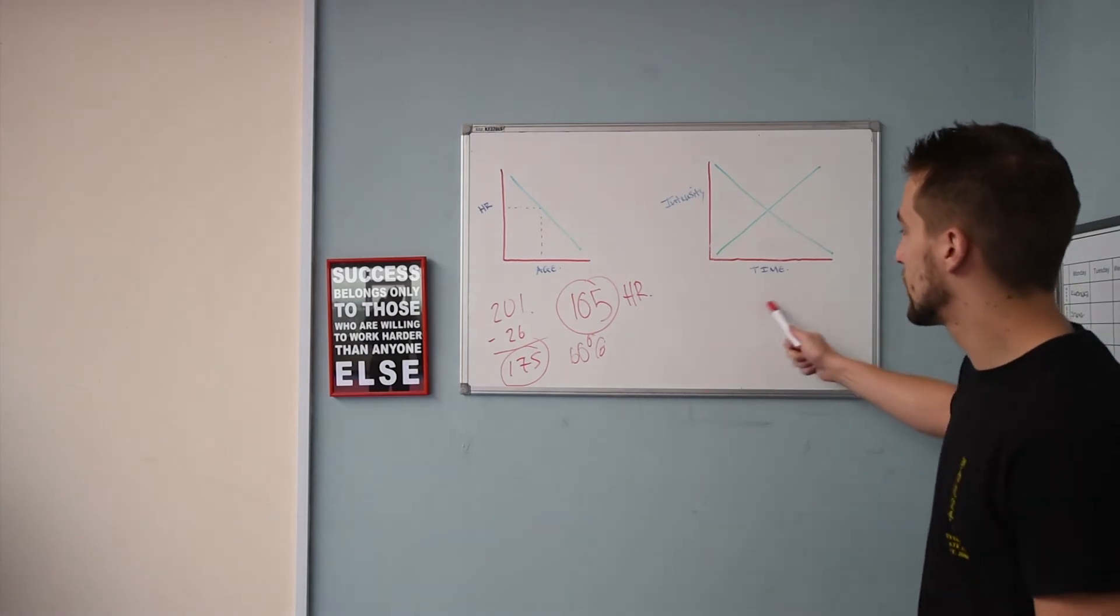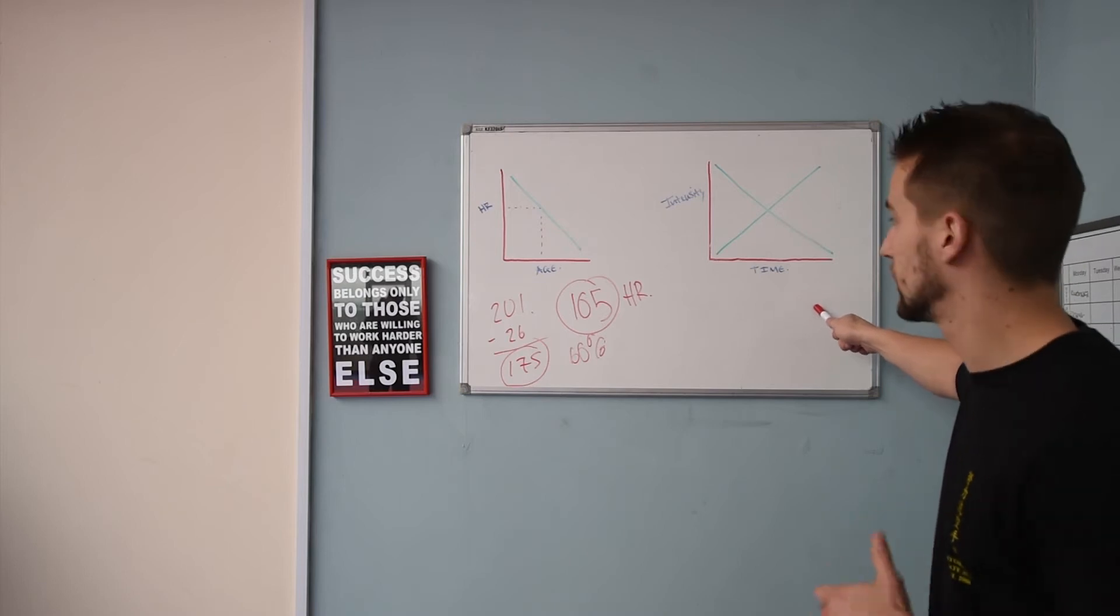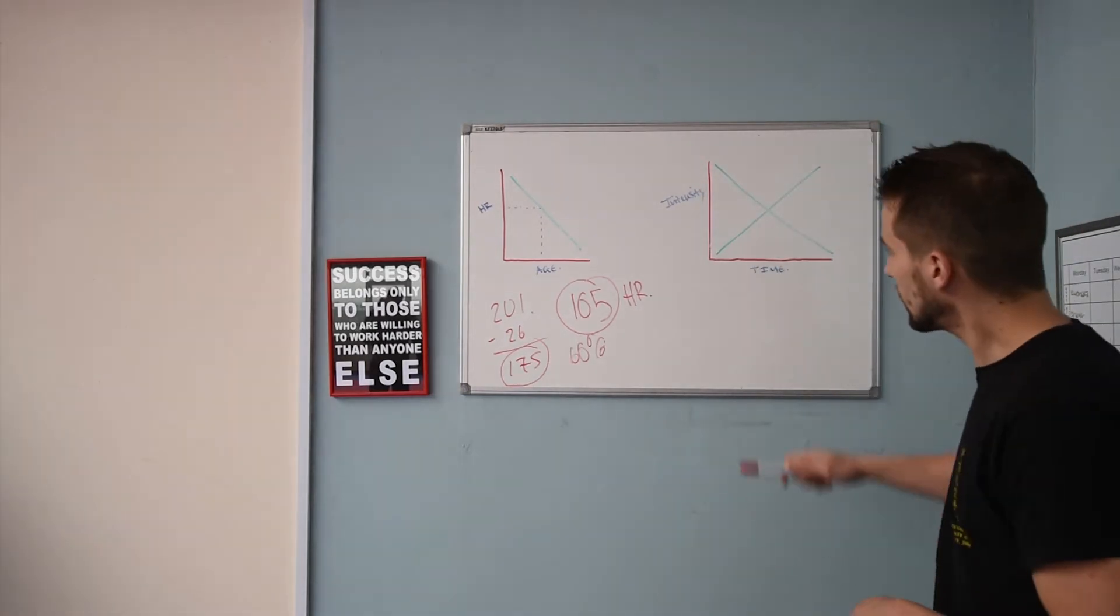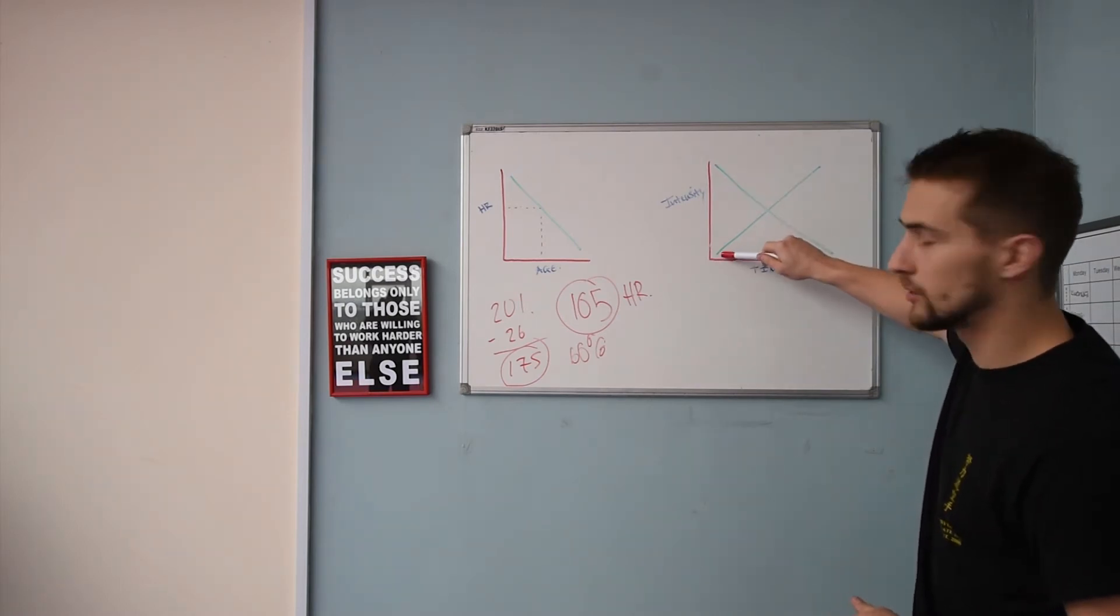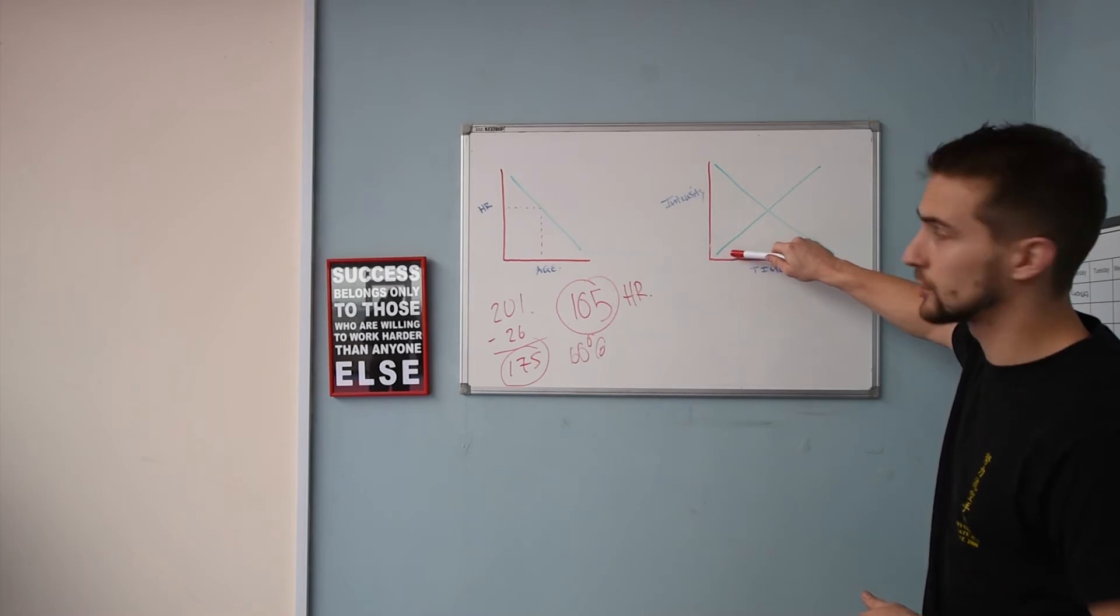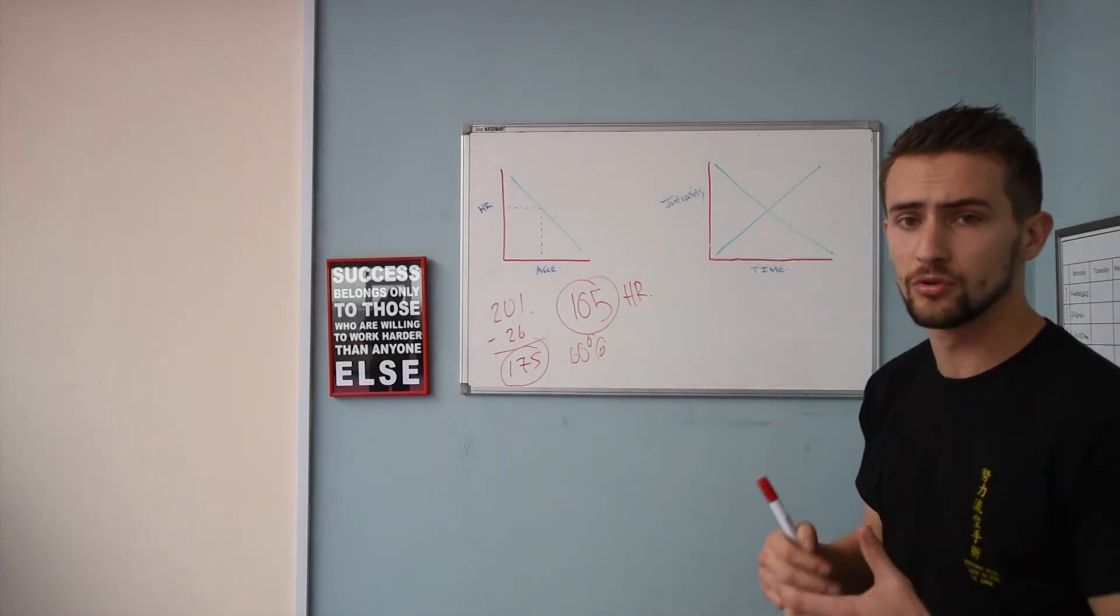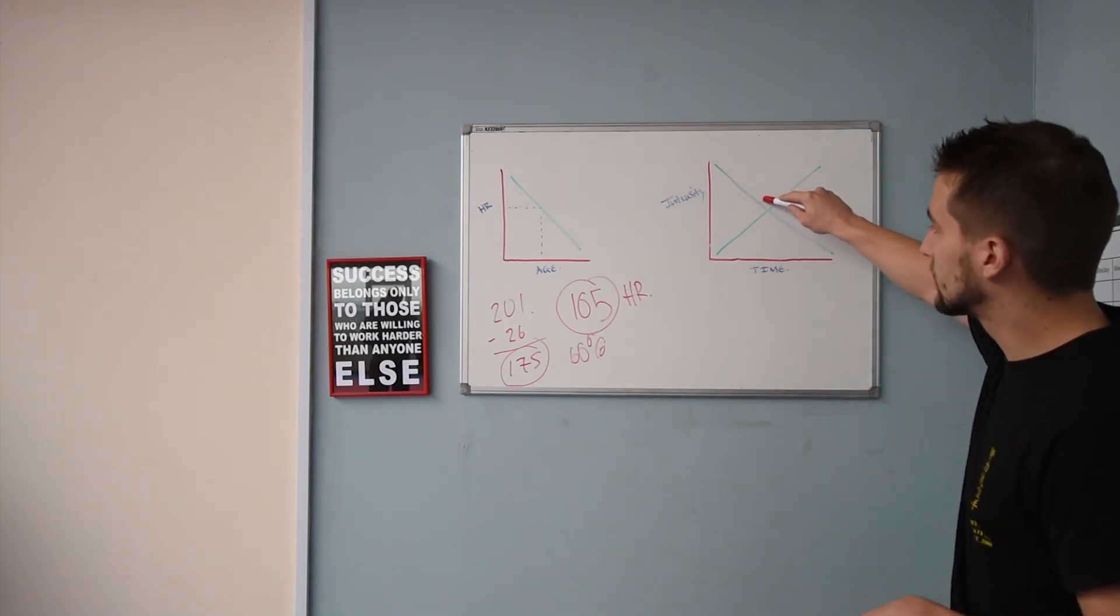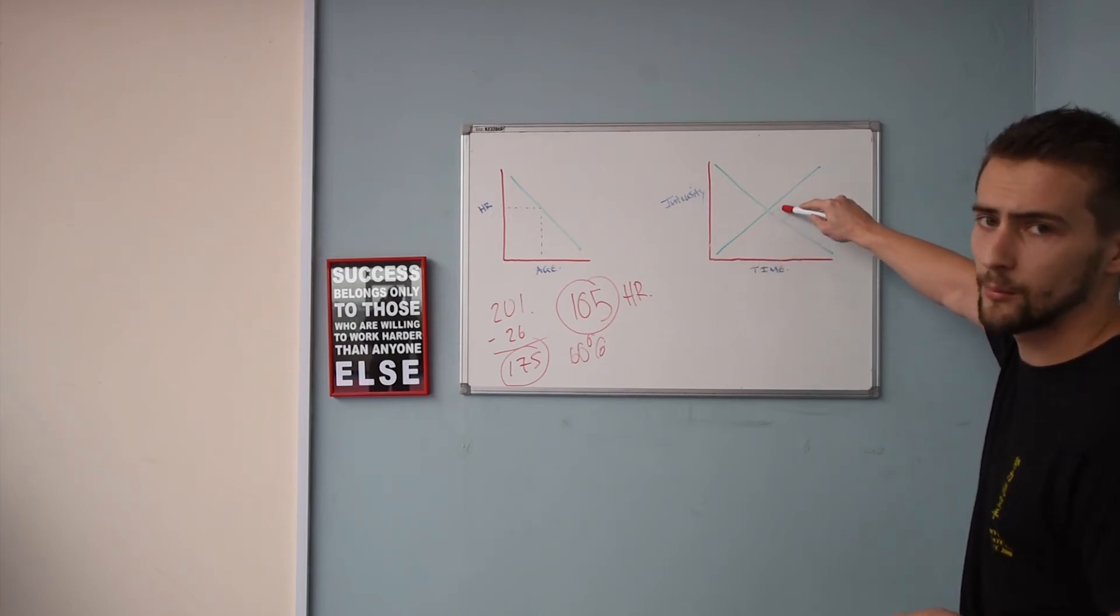So on my other chart here, this bottom is representation of time or duration of exercise. This is intensity. Now with a nice high intensity, you don't burn a lot of fat because you're working anaerobically. You're using your muscles, the energy stored within your muscles. The longer you draw out your exercise, the higher the fat burning will be.